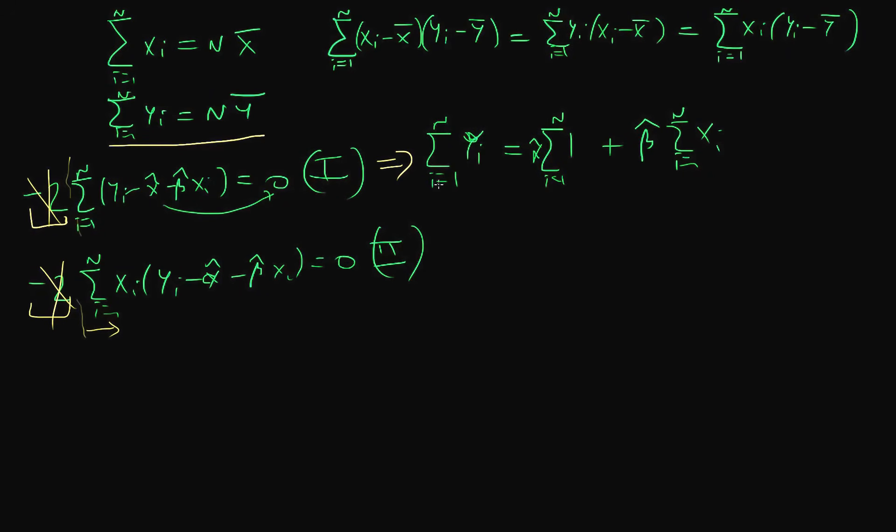The left-hand side, the sum of yi, just becomes n times y bar. So n times y bar equals alpha hat times n, plus beta hat times n times x bar, where I've used the top expression here to simplify the second term.